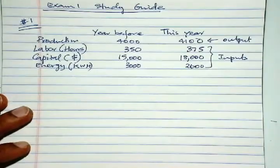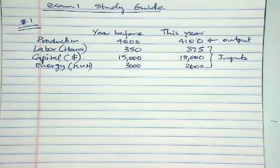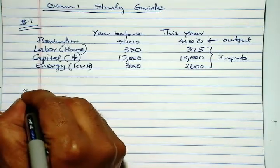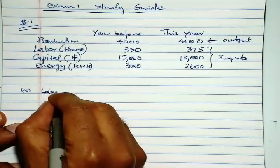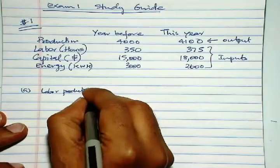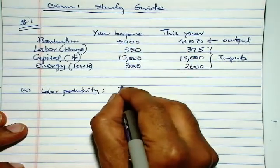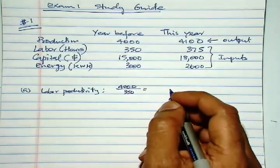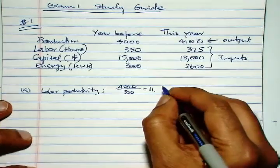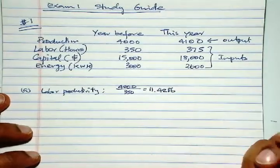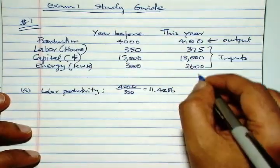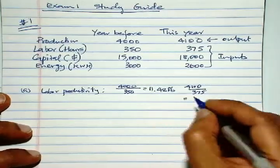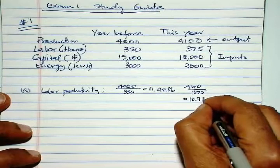The first question is to compute individual single factor productivities. For labor productivity, output is 4,000 divided by input 350, which gives us 11.4286 for the year before. This year is 4,100 divided by 375, which gives us 10.9333.